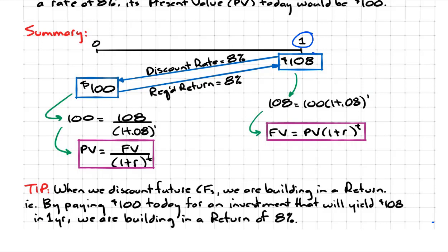To arrive at the framework, all we've got to do is replace these values with our corresponding variables. So the 108 is the future value, 100 is the present value, 8% is the required rate of return, and of course the one is the time period or your holding horizon.